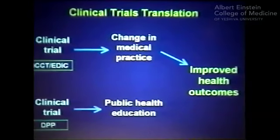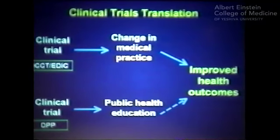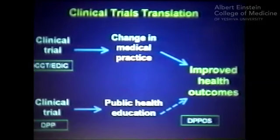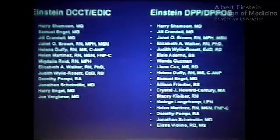To recap: the DCCT clinical trial model led to a change in medical practice and measurably improved health outcomes. The DPP model led to a public health campaign and changes in public health education. The one missing piece is that we don't yet know whether the DPP public health campaign will lead to improved health outcomes — and that's the subject of the follow-up study, the DPP Outcomes Study, or DPPOS, where we're following the cohort for development of diabetic microvascular complications. It takes a large village to run a clinical trial, and I wanted to list the people here at Einstein involved in the DCCT/EDIC study and the DPPOS. Thank you.